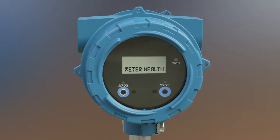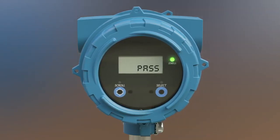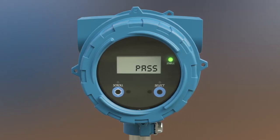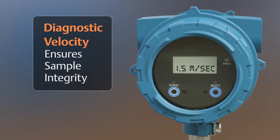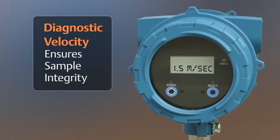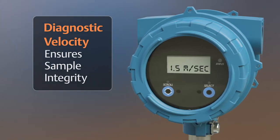The meter health diagnostic with pass or fail reporting can detect changes in performance since the meter left the factory. To ensure sample integrity, a diagnostic flow rate or velocity is available, which removes the need for a flow meter in a sample loop, saving on cost and potential leak points.